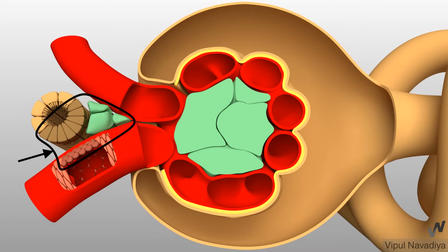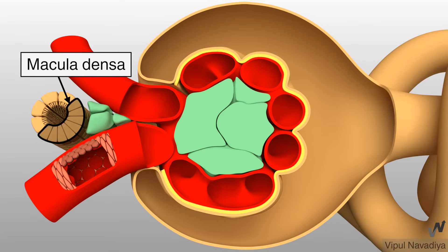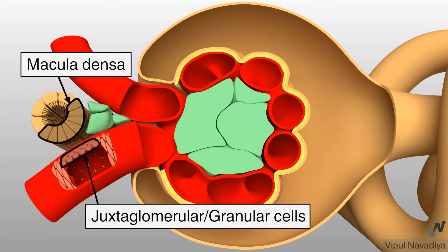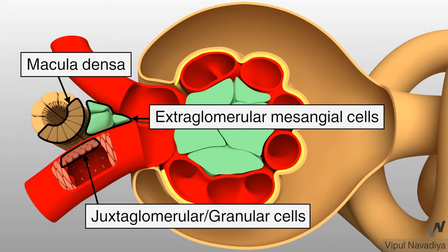It is formed by three structures. These are macula densa cells of the tubule, juxtaglomerular or granular cells of the afferent arteriole, and extraglomerular mesangial cells.